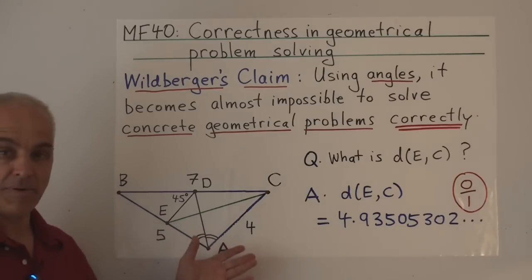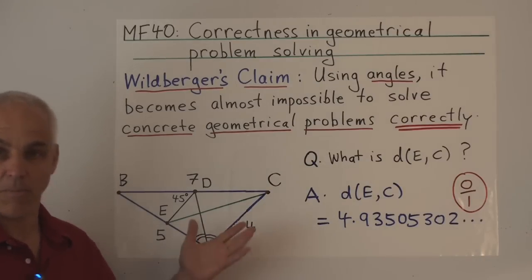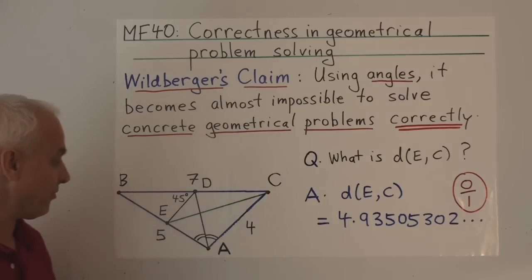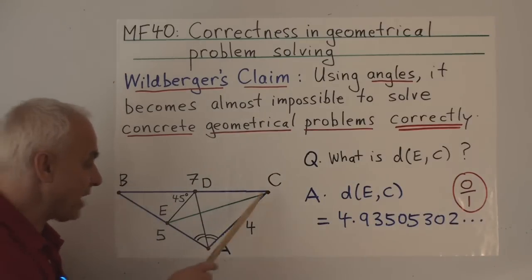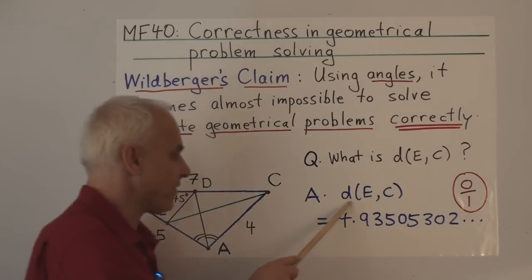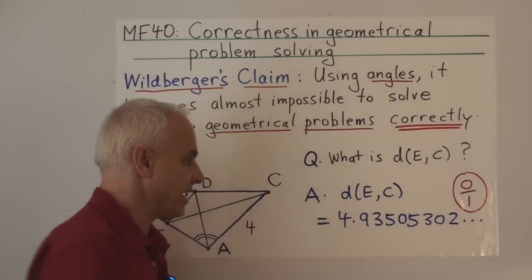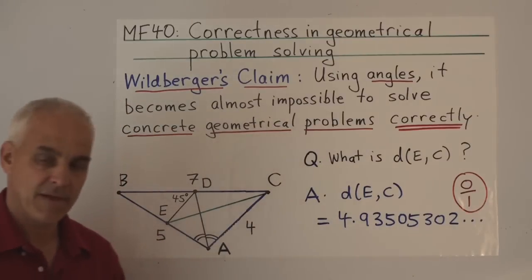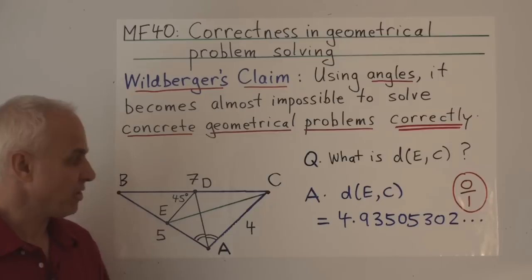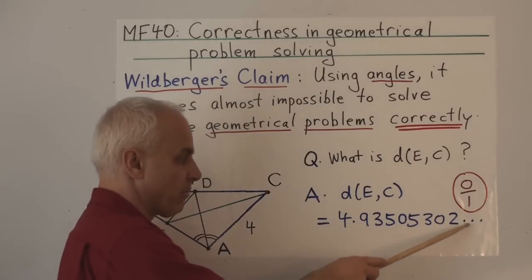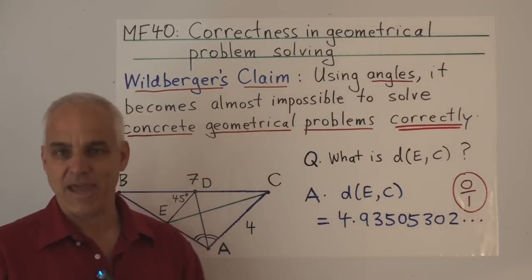You can imagine making thousands of other problems that are variants like this. Now, if you use the standard technology that people learn in high school and work with angles, you may have obtained an answer like this: the distance between E and C is equal to 4.93505302... And depending on how your calculator is set up, you may have gotten fewer or more digits, trailing off with three dots.